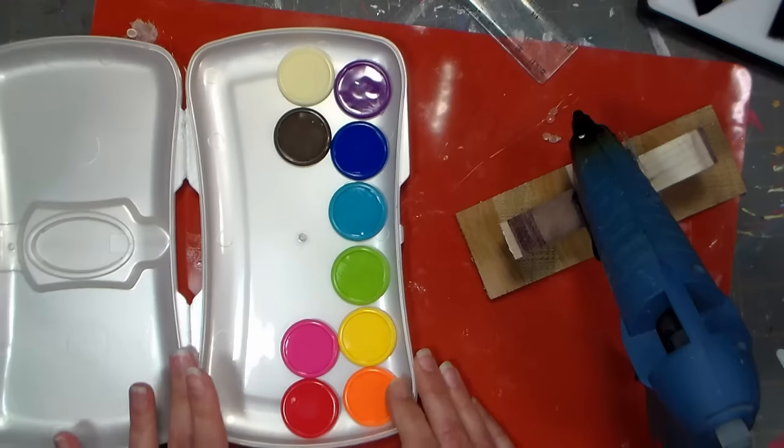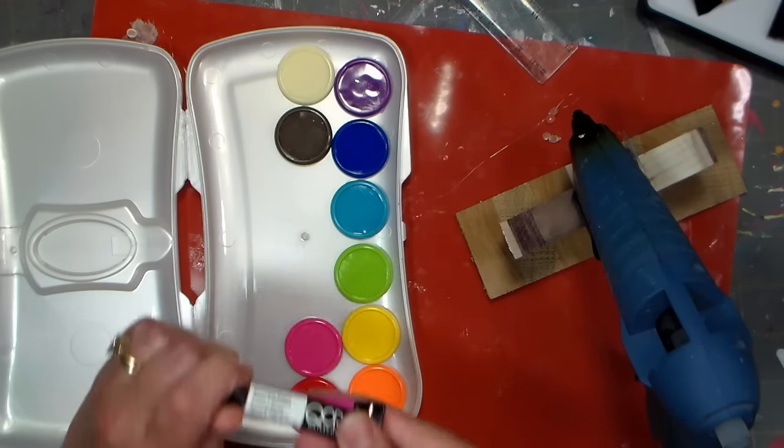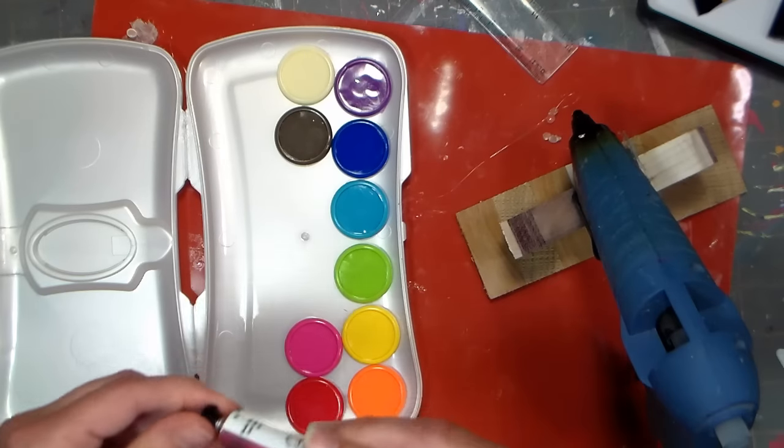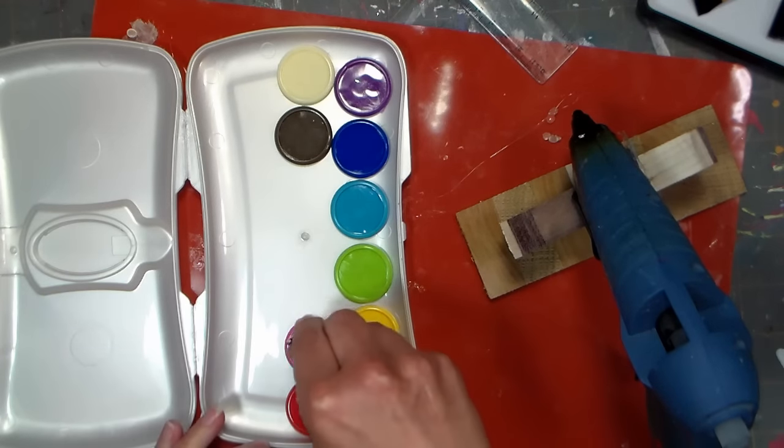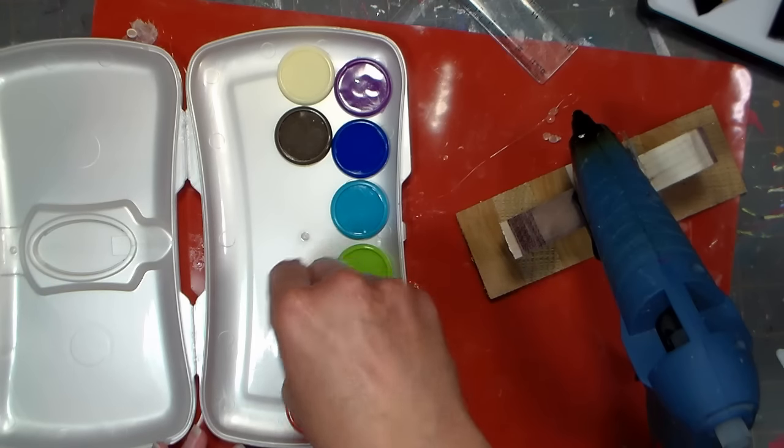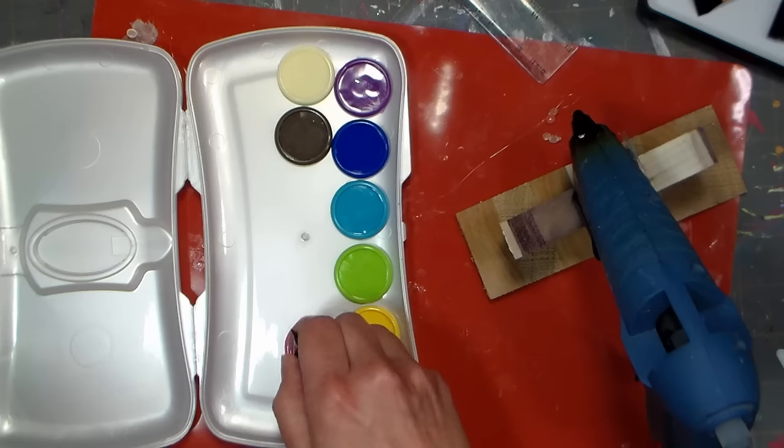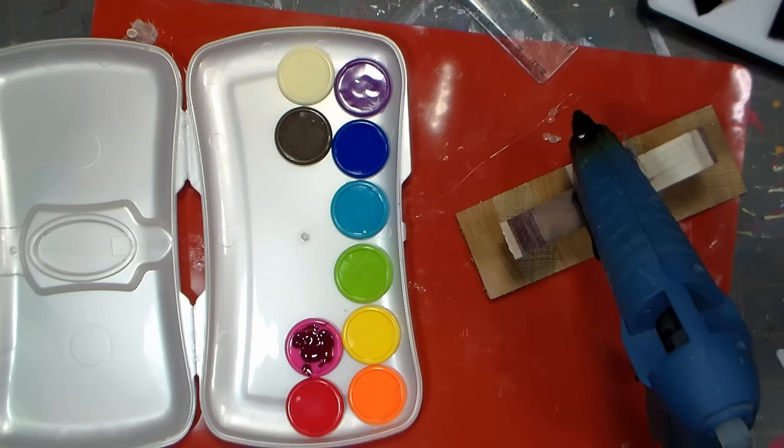For my watercolors I'm gonna use my Koi watercolors, and that's mainly because they really pack a big punch and they dry really hard. So what I'm doing is just putting a very thin coat so it doesn't extend past the rim. I just want to make sure I don't waste any, I love these colors.